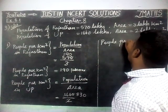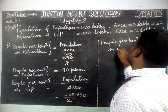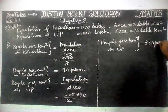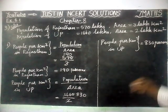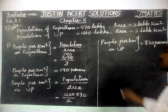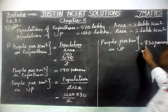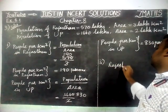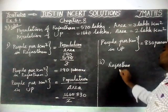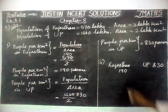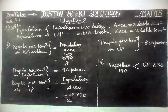Therefore, people per km² in Uttar Pradesh equals 830 persons. First question completed — we found how many persons are living per km². For the second question, which state is less populated: we compare Rajasthan with 190 persons and Uttar Pradesh with 830 persons. Rajasthan 190 versus Uttar Pradesh 830 — Rajasthan is the less populated state.